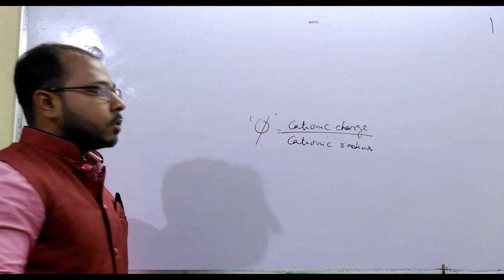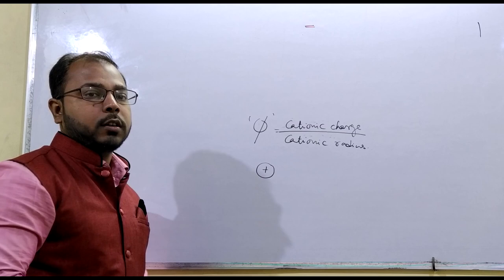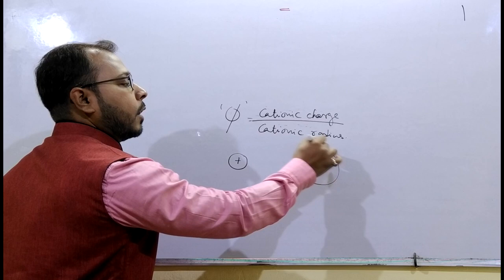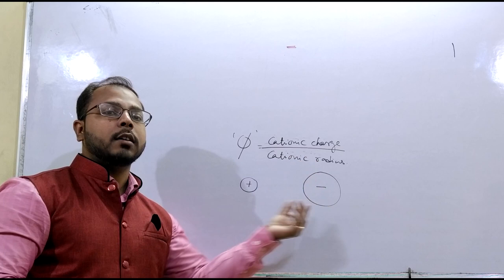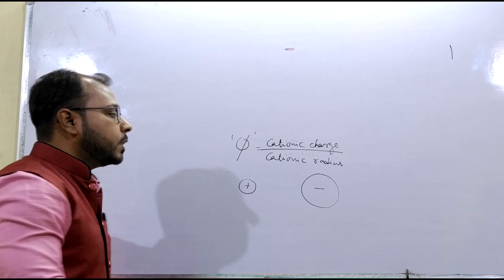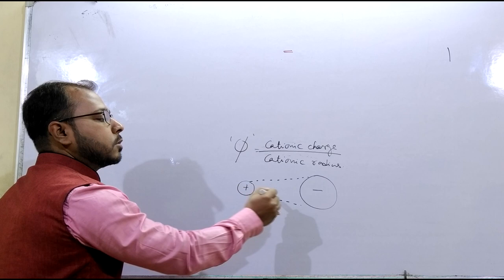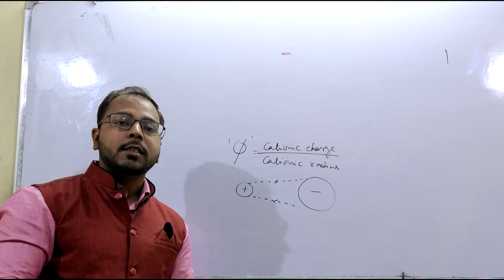So if a cation has lost one electron then it will form a cation, and if an element accepts that electron then it will form an anion. So cationic radius becomes smaller and anionic radius becomes larger. But after losing electron this cation will attract the anionic nucleus towards itself to get again neutralized. And this parameter is symbolized as phi, that is the cationic charge by cationic radius.